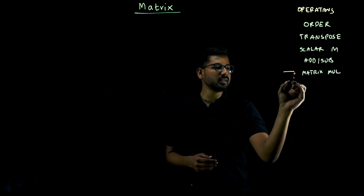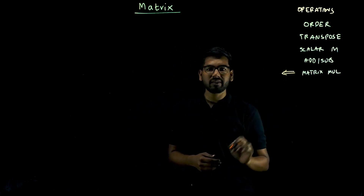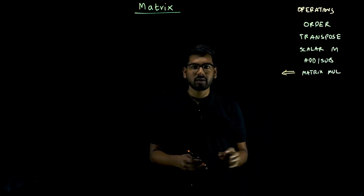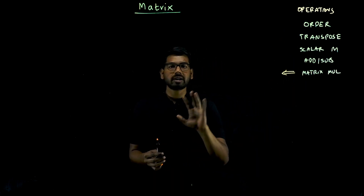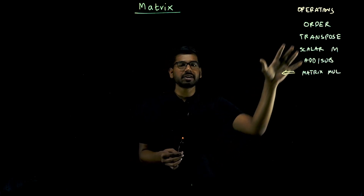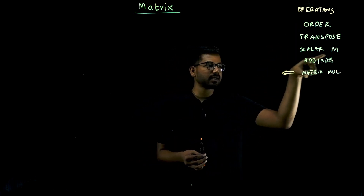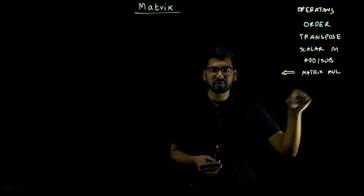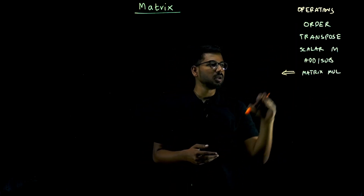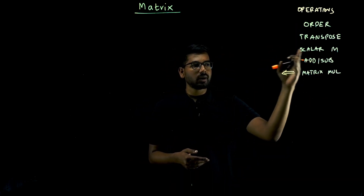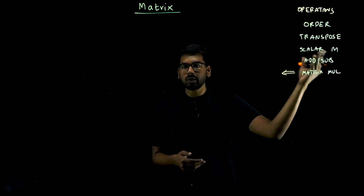The next operation is matrix multiplication. There are two types: scalar multiplication, which is one number into one matrix, and matrix multiplication between two matrices.